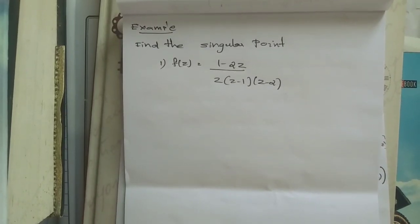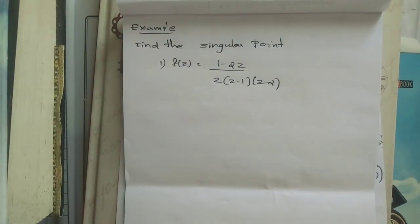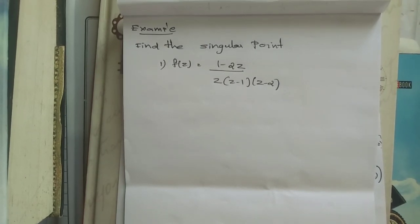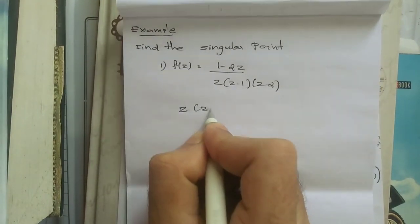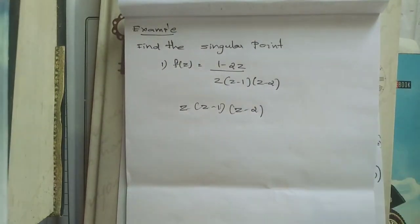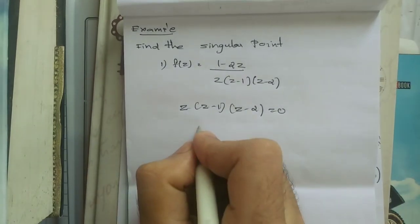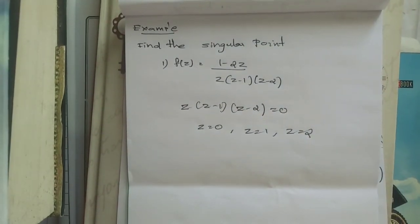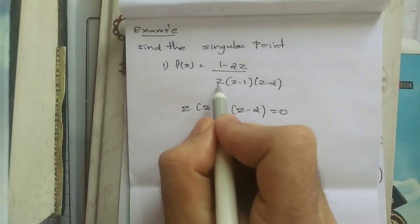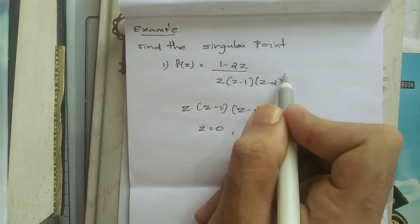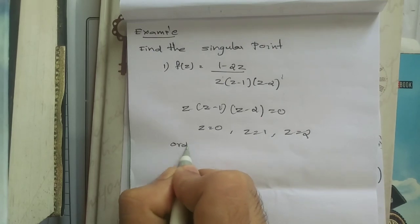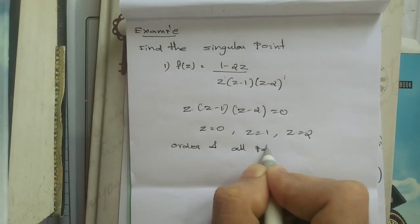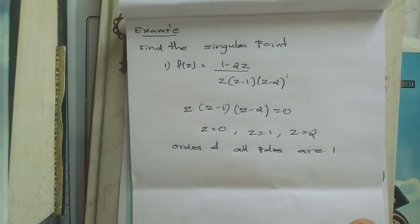Now let's look at an example to see how we can find the singular points of a given function. Here, f(z) = (1 − 2z) / [z(z−1)(z−2)]. The singular points are where the denominator equals zero, giving z = 0, z = 1, and z = 2. Notice that z, (z−1), and (z−2) are each raised to the power 1, so all poles have order 1 — these are simple poles.